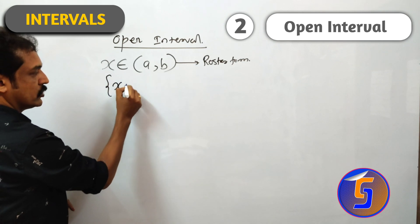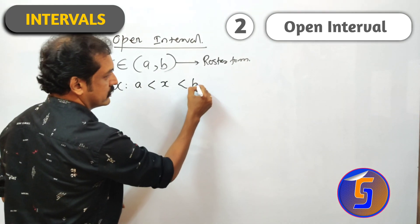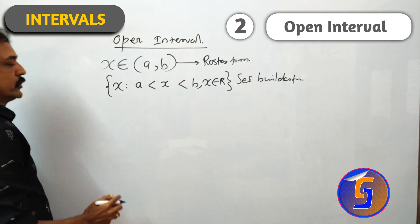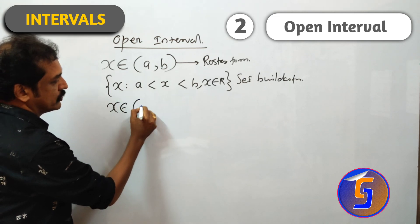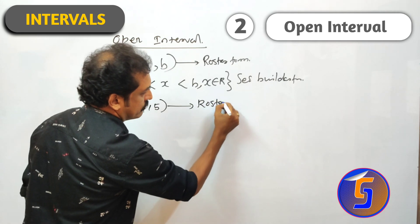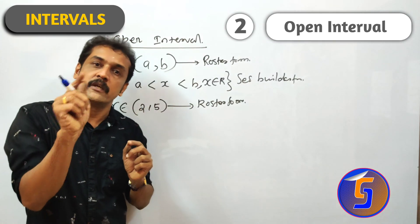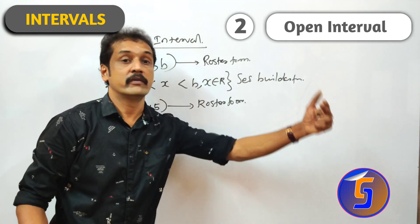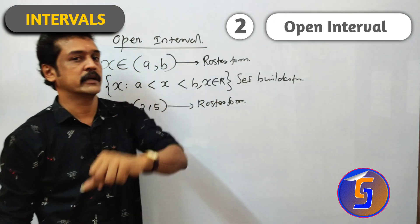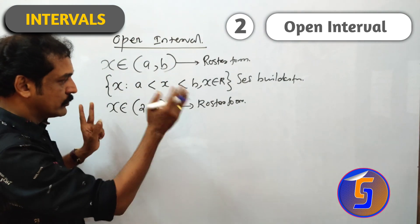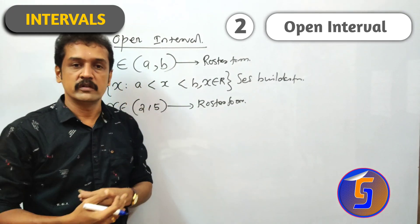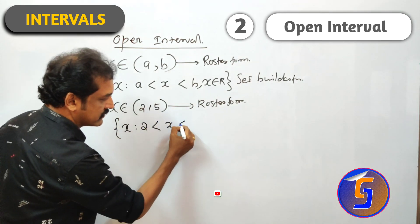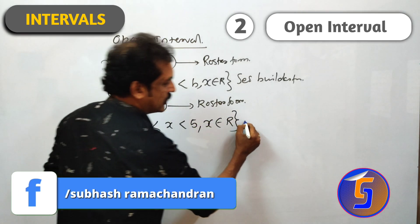The set-builder form is: set of all x such that a < x < b, x element of R. For example, x element of (2, 5) in roster form means the value of x lies between 2 and 5, excluding 2 and 5. Values like 2.01, 2.21, up to 4.99 are included. The set-builder form is: set of all x such that 2 < x < 5, x element of R.